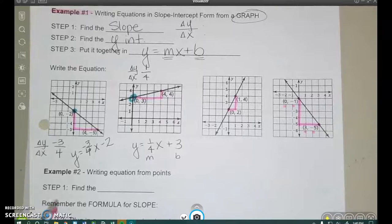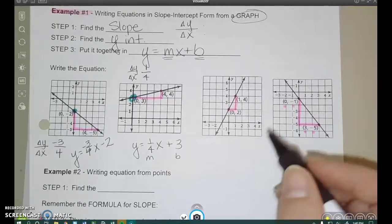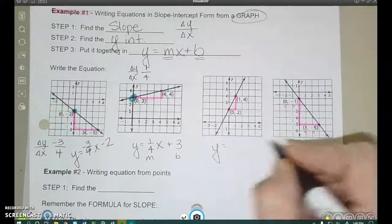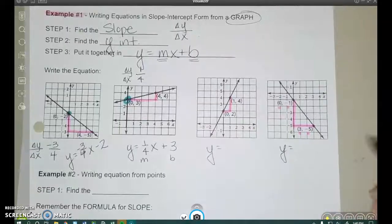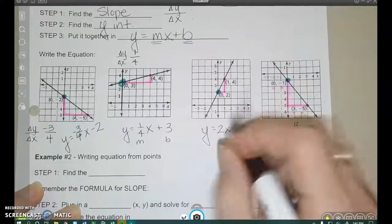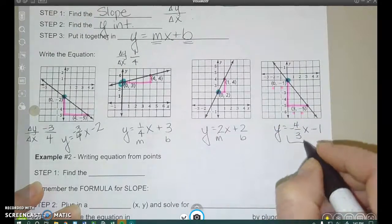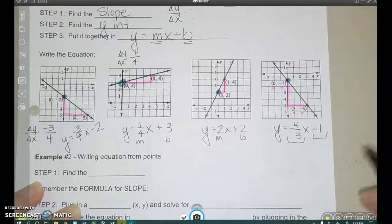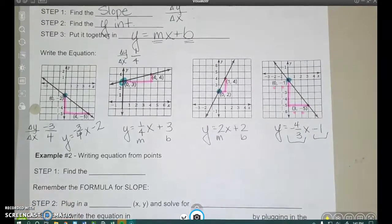All right, we've already got the triangles there. I want you to pause and write these equations. So hit play when you're ready to check those after you've done them yourself. Okay, here's what I got. A slope of 2, y-intercept of 2, slope of negative 4 thirds, y-intercept of negative 1.